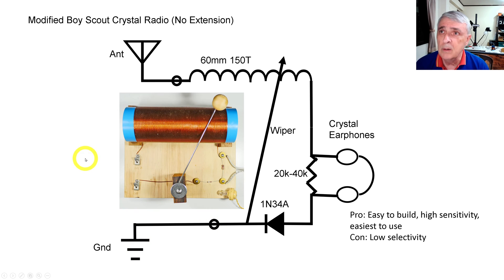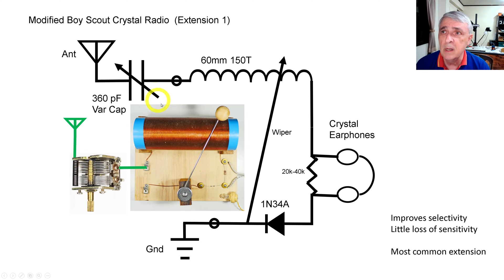So let's move right along to our first extension, and that is to put a variable capacitor in between the antenna and the connection point on the radio. And here you can see on the photograph what I've done is you just run a wire from here to the capacitor, and then you connect your antenna to the other side of the capacitor and you are done. Now this improves selectivity and there's very little loss of sensitivity depending on how far in the plates are tuned or not. And this is the most common extension.